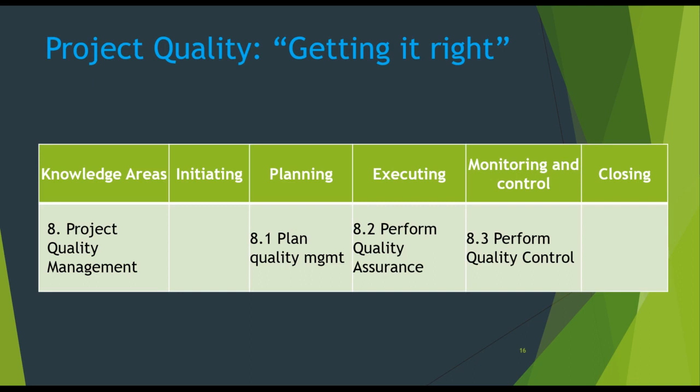Project quality management is the main criterion when it comes to determining the value of a project. The project at all times is required to meet the standards which were originally defined for it. The quality of the project has to meet the needs of the stakeholders. The processes are: plan quality management, manage quality, and control quality.